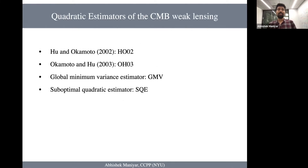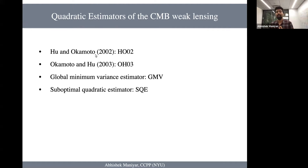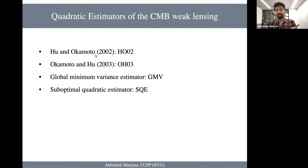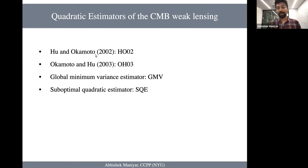There are different types of quadratic estimators, and these are the ones I'll talk about today. The very classic one is the Hu and Okamoto estimator, which was the first lensing quadratic estimator proposed in 2002. Then there is the Okamoto and Hu estimator, which is similar to Hu and Okamoto but slightly modified. Then I'll talk about something called the global minimum variance estimator — this is the name given by us, and this is the estimator we are proposing here. Finally, I'll talk about the suboptimal quadratic estimator, which is actually used in the data analysis of the Planck and SPT data.